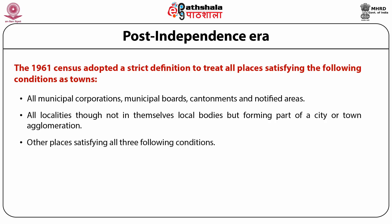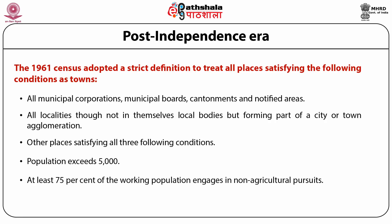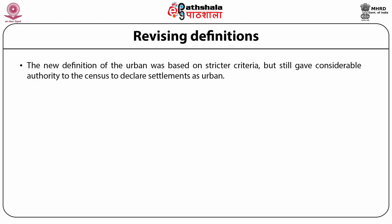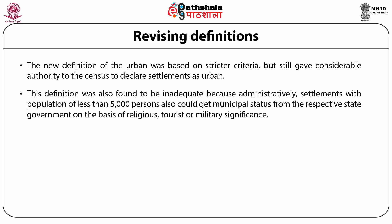Other places were classified as urban if they satisfied all three of the following criteria: population exceeds 5,000; at least 75% of the working population is engaged in non-agriculture pursuits; and the density of population exceeds 400 persons per square kilometer. The new definition was based on stricter criteria but still gave considerable authority to the census to declare settlements as urban. For the first time, economic activity — both agriculture and industrial — became the basis of distinction between the rural and urban. This definition was found inadequate because administratively, settlements with population of less than 5,000 could also get municipal status from their respective state government on the basis of religious, tourist or military significance.